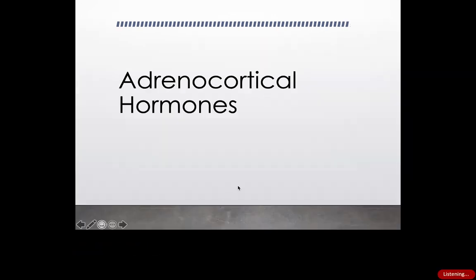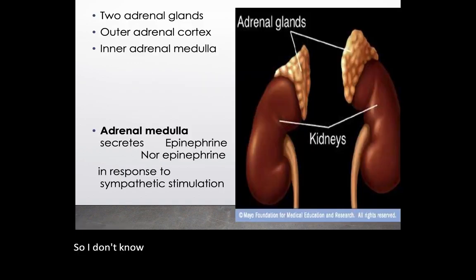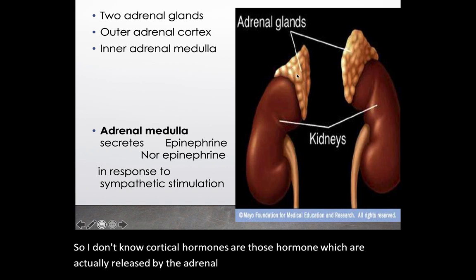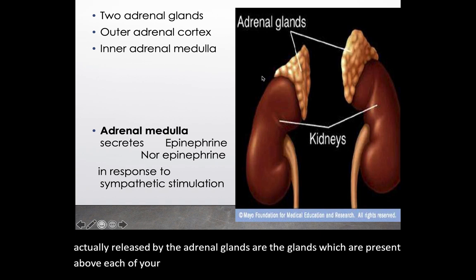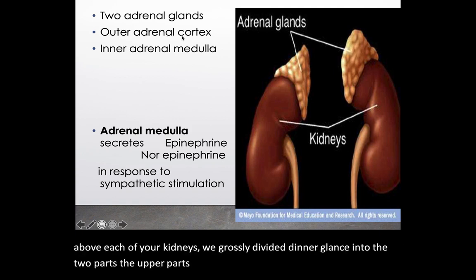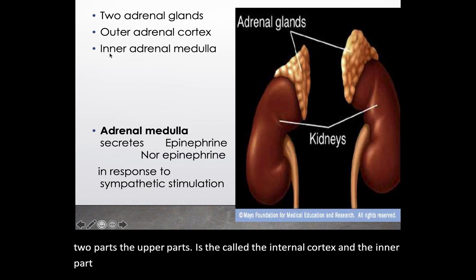Adrenocortical hormones are those hormones which are actually released by the adrenal glands. The adrenal glands are the glands which are present above each of your kidneys. We grossly divide the adrenal glands into two parts: the outer part is called the adrenal cortex and the inner part is known as the adrenal medulla.